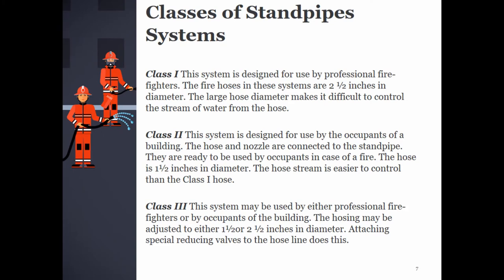Classes of Standpipe Systems: Standpipe systems are classified depending on who is expected to use them. Class 1 is designed for use by professional firefighters; fire hoses are 2½ inches in diameter, making the stream difficult to control. Class 2 is designed for use by building occupants; the hose and nozzle are ready for use and the hose is 1½ inches in diameter, with a stream easier to control. Class 3 may be used by either professional firefighters or occupants; the hose may be adjusted to either 1½ or 2½ inches in diameter by attaching special reducing valves.